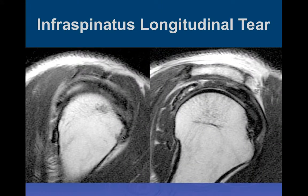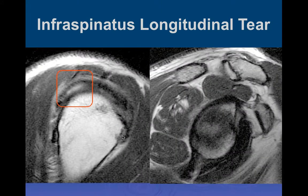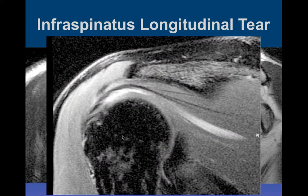Here's one with low signal intensity due to acute hemorrhage within the cyst of the muscle-tendon tear. And this is just another longitudinal tear which you can follow. This one is into the infraspinatus.